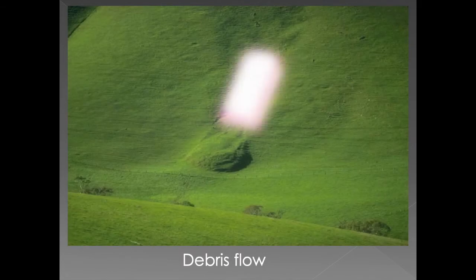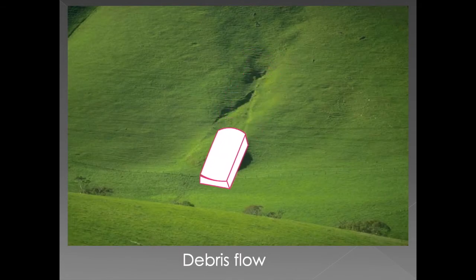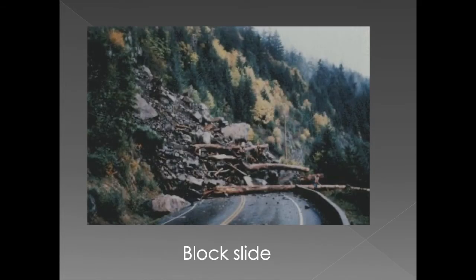Look at this example here where the slope is weakened because material gets into the soil, loosening it, and all of that simply rushes forward as a debris flow. Here we see an example of a block slide where an earthquake caused an unbreaking of the landscape, loosening it, and now all the rocks, the soil, and even the trees all rush forward almost like an avalanche.